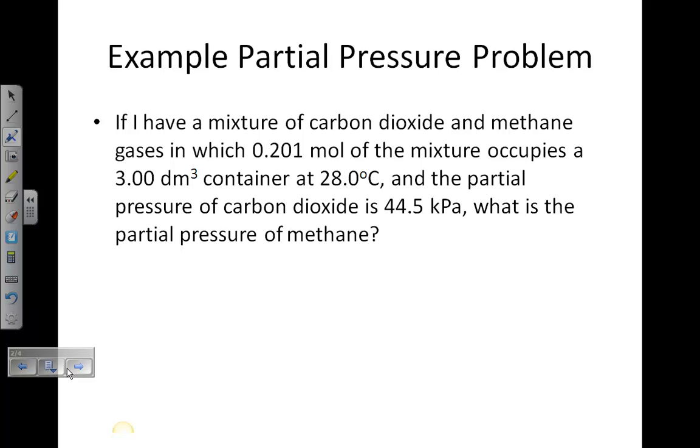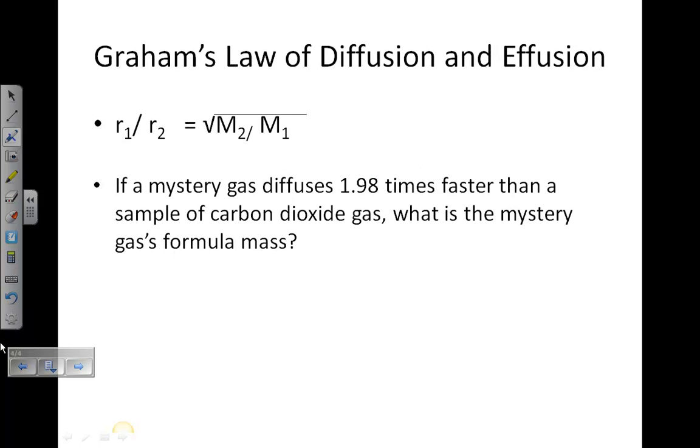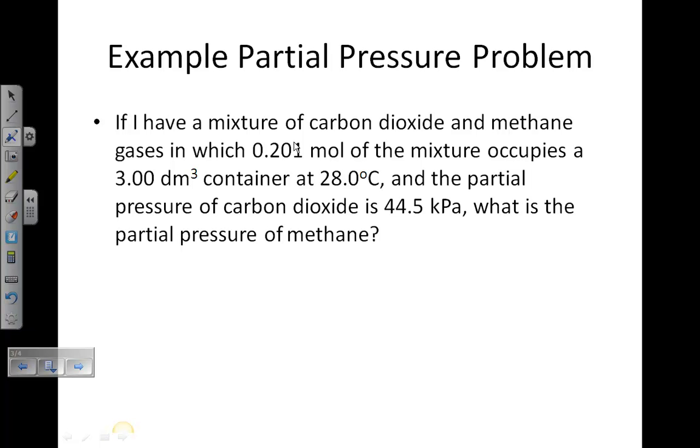Here's an example. You have information for carbon dioxide and methane gases: moles, volume, and temperature. This is moles N, this is volume V, and this is temperature T. Don't forget to convert to Kelvin, so this is 301 Kelvin. You have a partial pressure of CO2. How do you get PCH4?